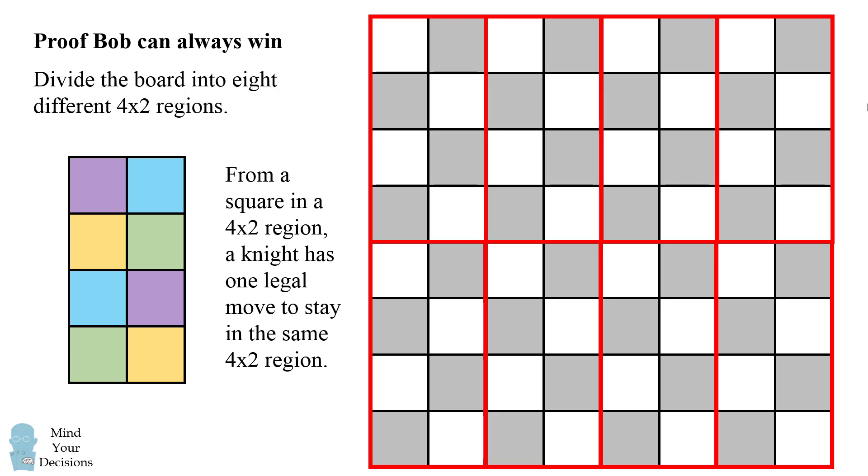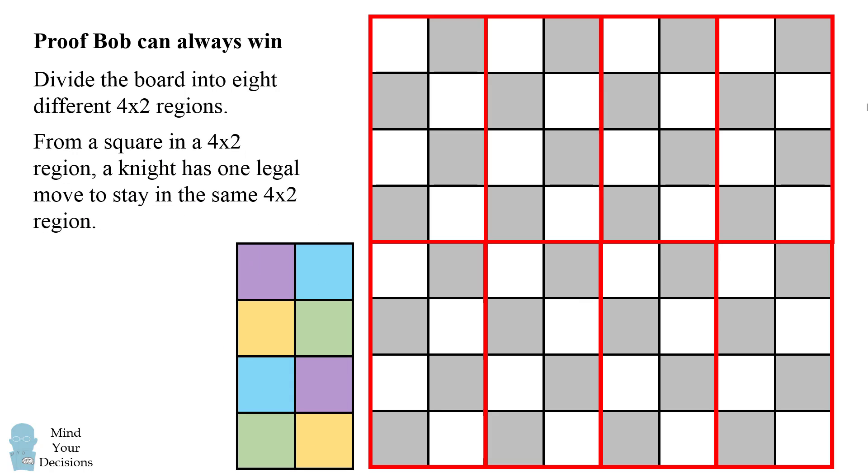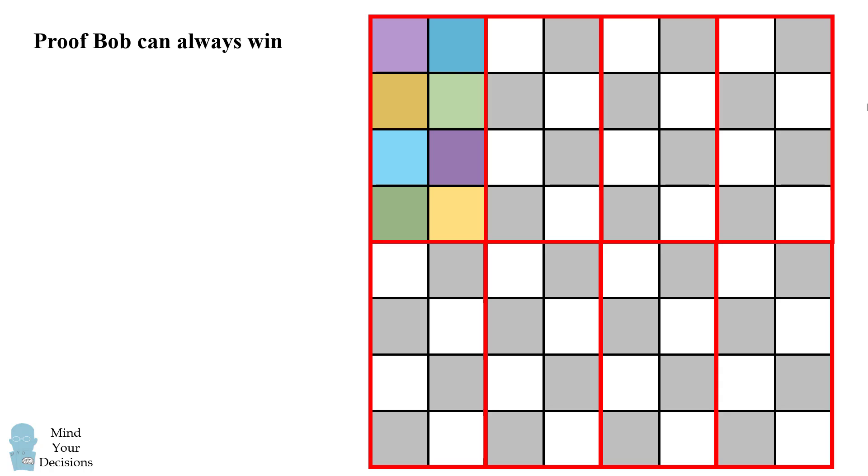Now what can this coloring do? Well, it'll apply to every single one of these 4x2 regions. So from a given 4x2 region, we know there's only one legal move to stay in that same 4x2 region. So how does this help Bob win the game?